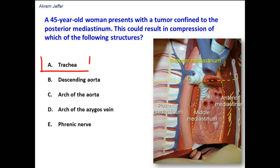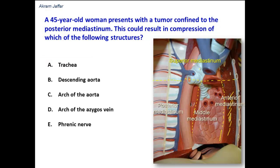First option: the trachea. Here you can see this is the trachea. The trachea is located in the superior mediastinum, and it bifurcates at the level of the transverse thoracic plane, so it does not extend into the posterior mediastinum.